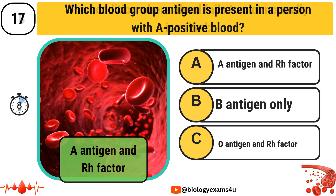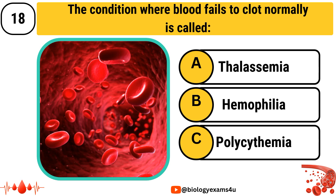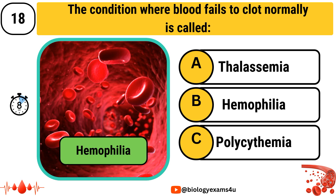The condition where blood fails to clot normally is called: Option A: Thalassemia, Option B: Hemophilia, Option C: Polycythemia. The answer is Hemophilia.